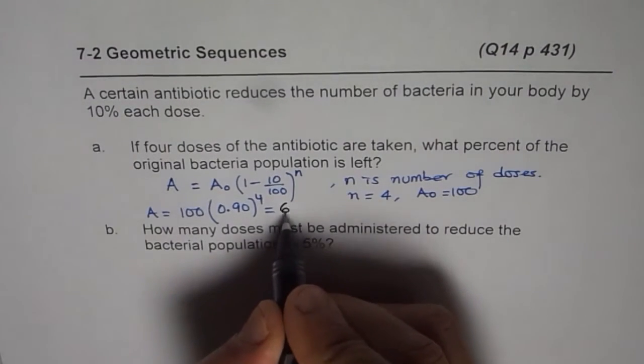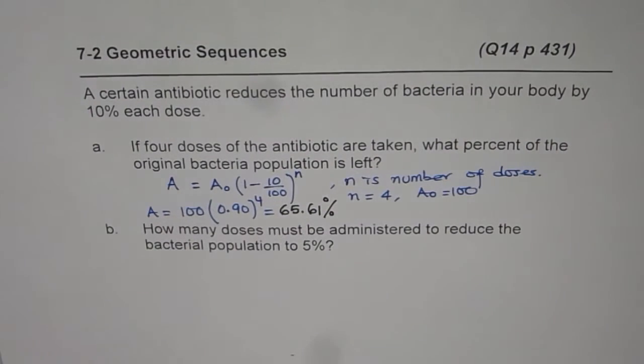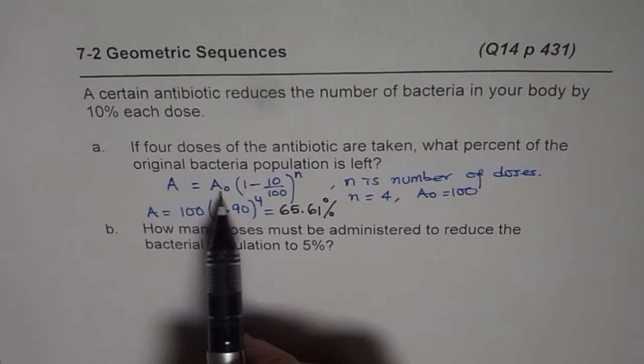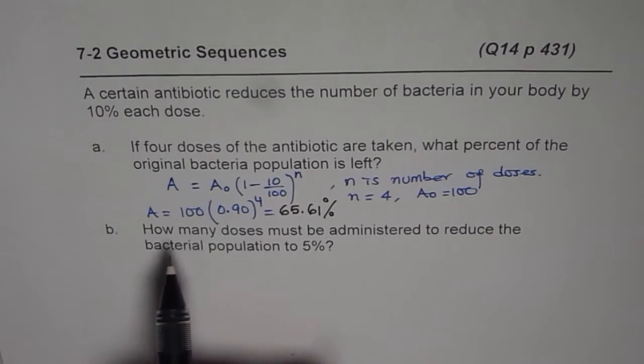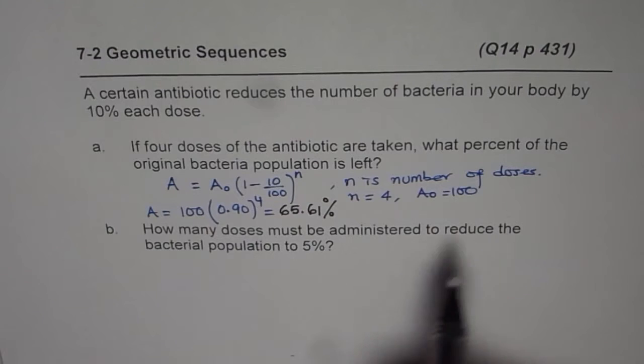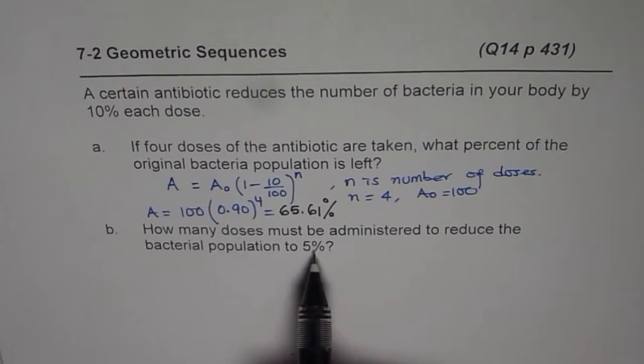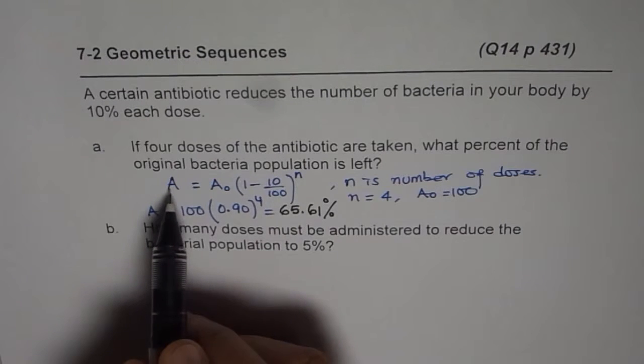We get our answer which is 65.61 percent. We get direct percent since we took original number or amount as 100. Now the second question is: how many doses must be administered to reduce the bacteria population to 5 percent?